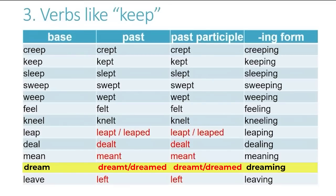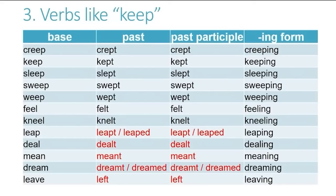Now, 'dream' is another one which has two forms. One is the irregular form, 'dreamt.' The other is the regular form, 'dreamed,' with an -ed ending, in which case 'dreamed' remains in the long e sound. Then the last one is 'leave.' It follows the same pattern — leave, left, left — with a short e in the past and past participle and a t ending. In this case, the ea spelling is used in the base form, but only one e is used in the past and past participle.